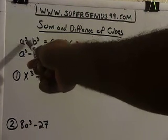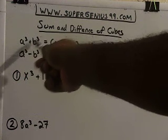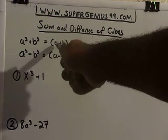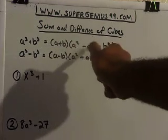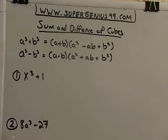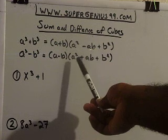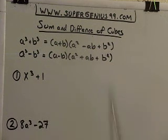If we have two numbers cubed, we can call them A cubed plus B cubed, and we want to factor them. The way we factor is A plus B, A squared minus AB plus B squared. We have A cubed minus B cubed, it's A minus B, A squared plus AB plus B squared.